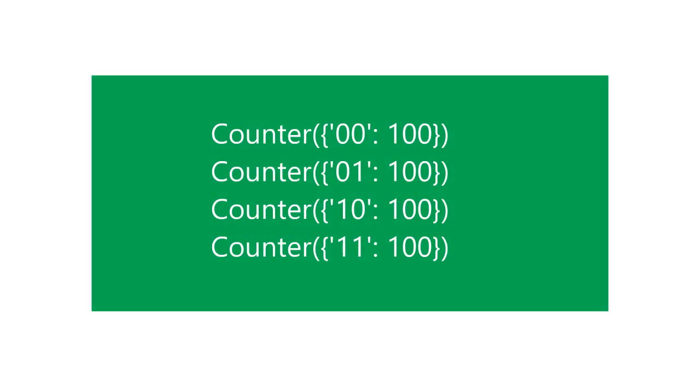If you look at all the results, we can see that we have succeeded in getting the correct result. This is a simple example of Grover's algorithm.